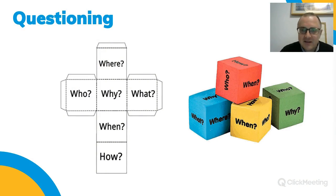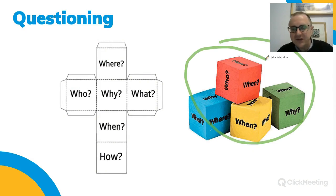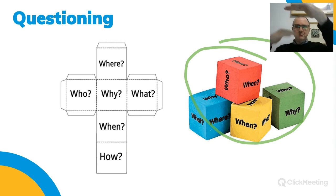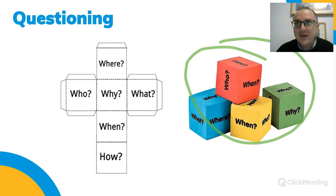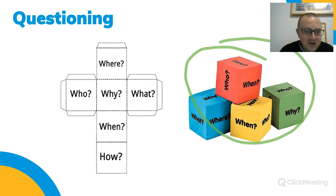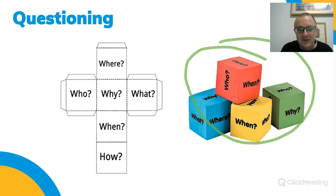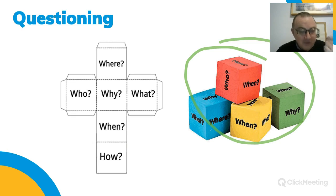Another great activity is making dice. You make a big dice with a cut-out template and put question words on the faces — who, what, where, when, why, how. When you're telling a story about, say, a monkey, you roll the dice: where is the monkey? Who are the monkey's friends? When did we see the monkey? The kids have to come up with creative questions about the topic you're covering. It's a lovely way to keep practicing question forms while encouraging creativity.